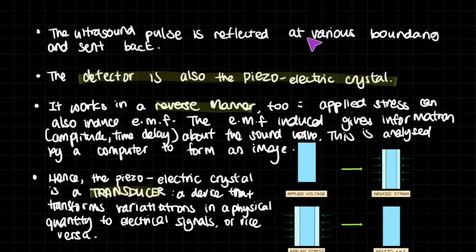The ultrasound pulse is reflected at various boundaries and sent back. What detects these reflected waves? The detector is also the piezoelectric crystal. It works in a reverse manner as well, which means that if you apply stress - if you change the shape because of differences in pressure - this will also induce EMF within the crystal.